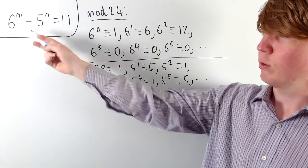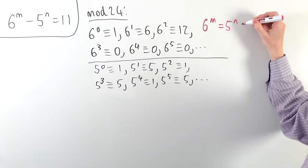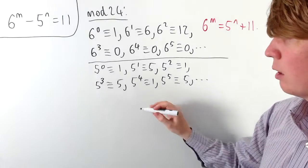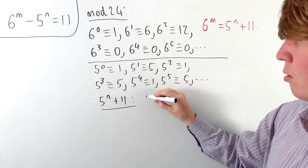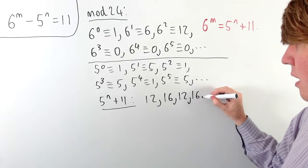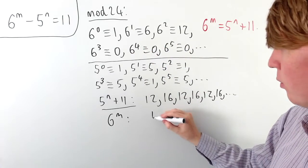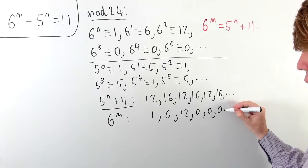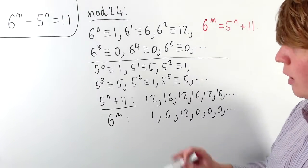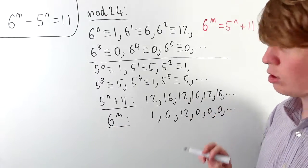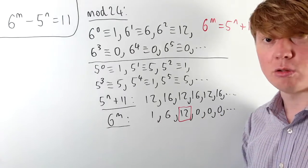Thinking about our equation, we have 6 to the m minus 5 to the n equals 11. Rearranging, we want 6 to the m equal to 5 to the n plus 11. The values of 5 to the n plus 11 just alternate between 1+11=12 and 5+11=16, giving 12, 16, 12, 16, and so on. Meanwhile, 6 to the m gives 1, 6, 12, then 0 for all higher powers. For the equation to hold mod 24, the only matching value is 12, which corresponds to 6 squared.